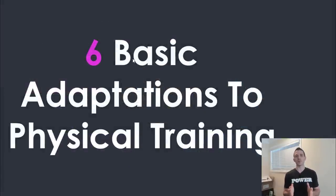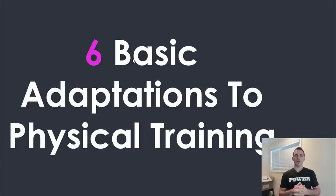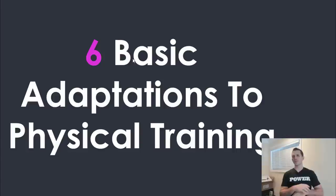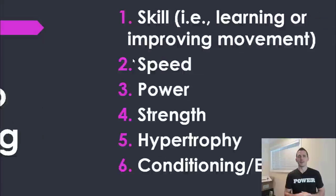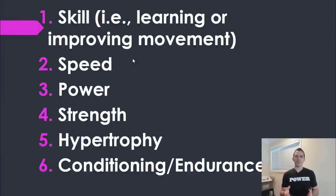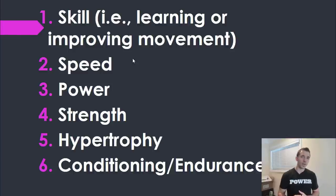I like to focus, both in how I teach and how I think about training, on there being six basic adaptations to physical training. There are infinite ways to split them up, but these six are a useful overview. Skill is the first one — this is motor skill or motor control. It could be anything from shooting a billiard ball, basketball shooting technique, running technique, or squatting technique — mechanics, right? It's a skill development issue.